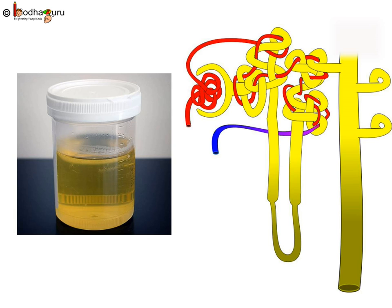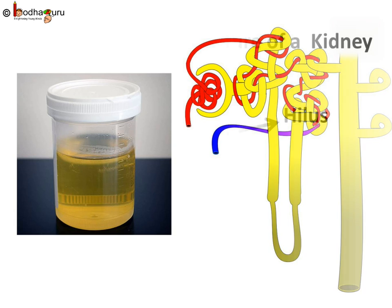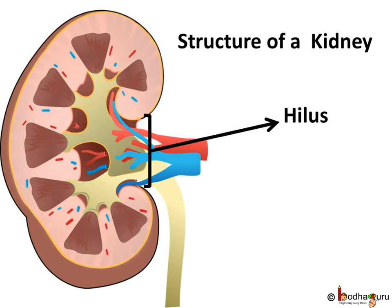Each kidney has a large number of these filtration units called nephrons packed close together. A kidney has around 1.3 to 1.8 million nephrons. The inner side of each kidney has a fissure called the hilus for the entry of the renal artery and the exit of the renal vein and the ureter. The renal vein contains filtered but deoxygenated blood and the ureter carries urine. Within 5 minutes all your blood can pass through your kidneys and get filtered.